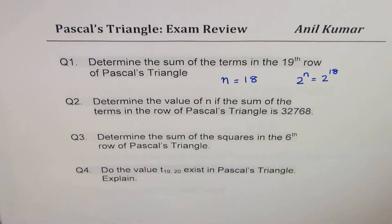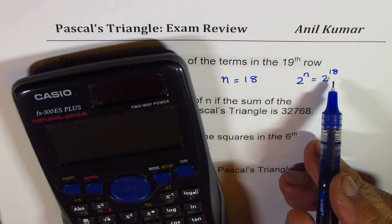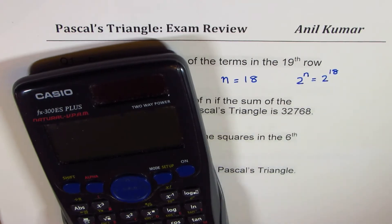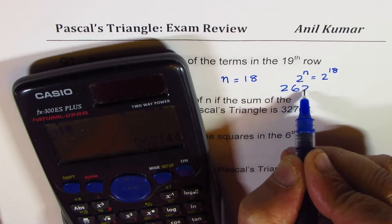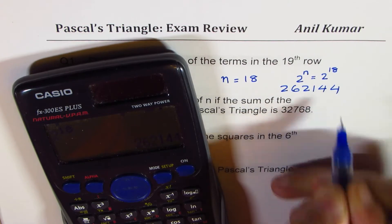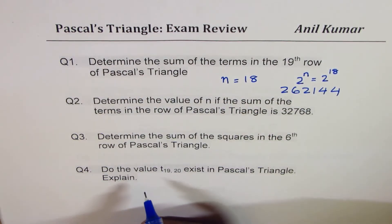At times, students might do a mistake of writing 19 there. That will be wrong. So 2 to the power of 18 is equal to this number, which is 262144. So that becomes the answer for question number one.